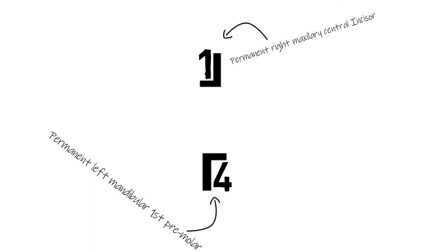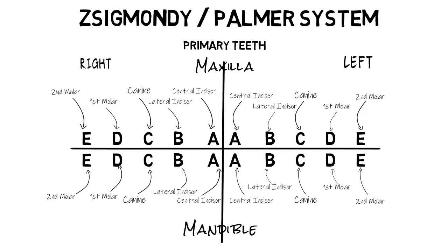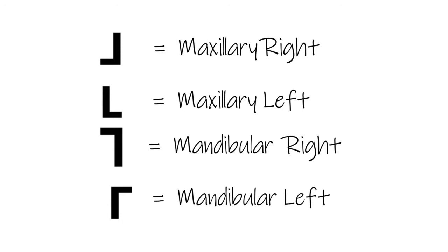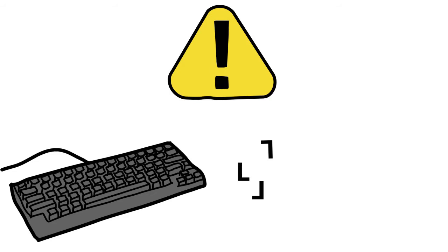So the Palmer system basically has a number for a particular permanent tooth type — for example, 1 for central incisor, 2 for lateral incisors — and an alphabet for a particular primary tooth type, while the sign differentiates between the individual quadrants. When you write both of them together, they give you a complete tooth designation. This is your Palmer system.